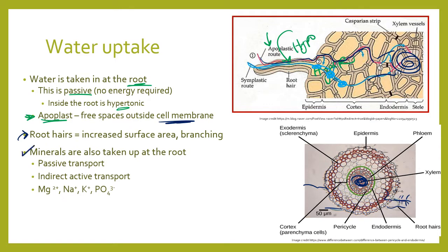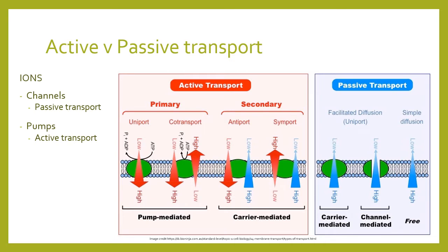Minerals are also taken up at the root via some passive transport and some active transport. That active transport is usually indirect — we have co-transporters. Some of the minerals that plants need to take up include magnesium, sodium, potassium, and lots of phosphates. Ions can move passively through protein channels, or actively via protein pumps using ATP — remember that channels facilitate diffusion (passive), while pumps require ATP for active transport.